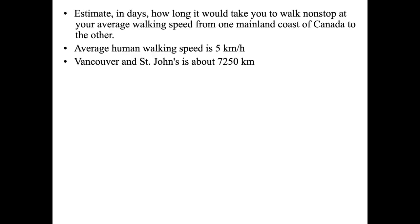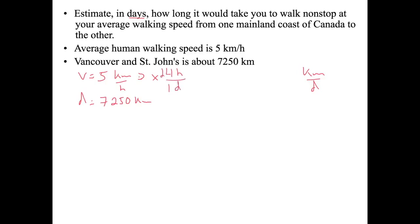Next question: estimate in days how long it would take to walk non-stop at average walking speed from one main coast of Canada to the other. Human walking speed v is 5 kilometers per hour, and the distance is approximately 7,250 kilometers. Converting velocity to kilometers per day: 5 kilometers per hour times 24 hours per day gives approximately 120 kilometers per day.